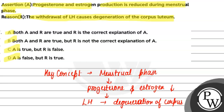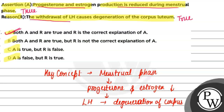The first statement — that progesterone and estrogen are reduced during the menstrual phase — is a true statement. The reason given, that the withdrawal of LH causes degeneration of the corpus luteum which secretes progesterone, is also true and correctly explains the assertion. So the answer is A. I hope you understood it well — best of luck.